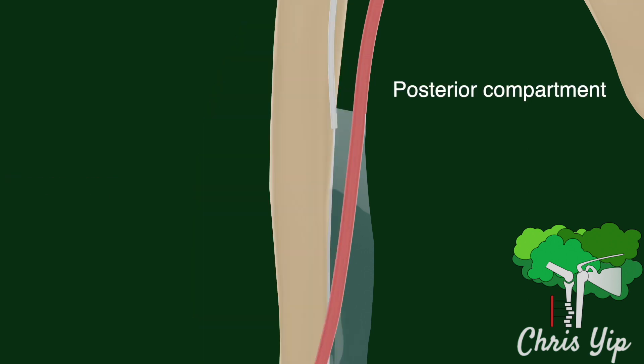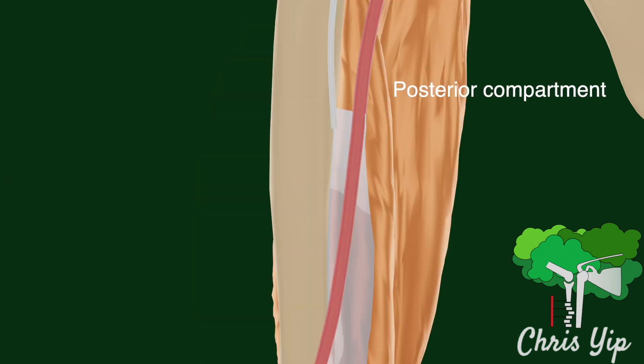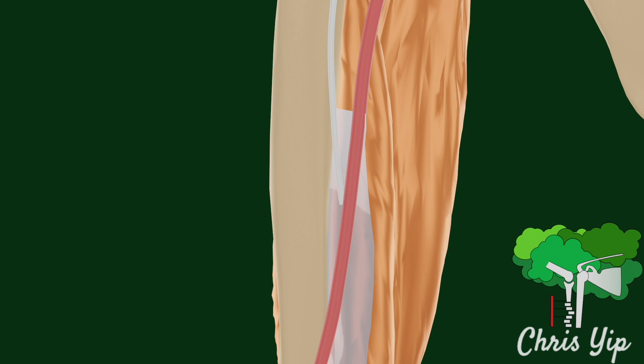In the posterior compartment there are the tricep muscles. As the ulnar nerve reaches around 10cm proximal to the medial epicondyle, it perforates through this medial intermuscular septum through a fibrous area called the arcade of Struthers into the posterior compartment.